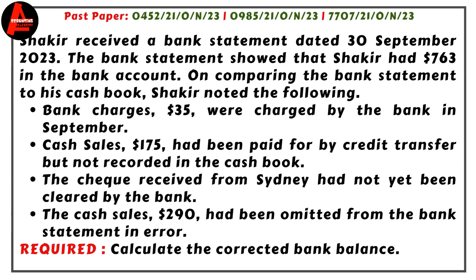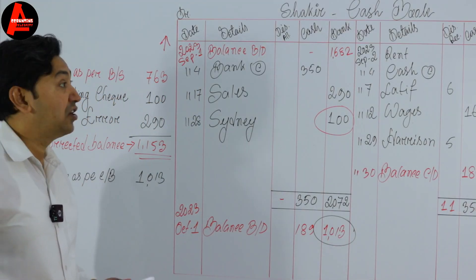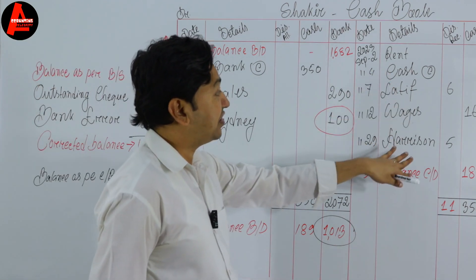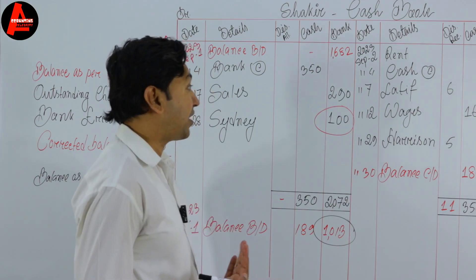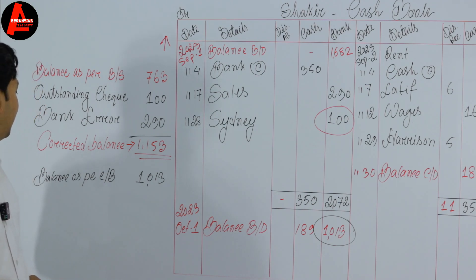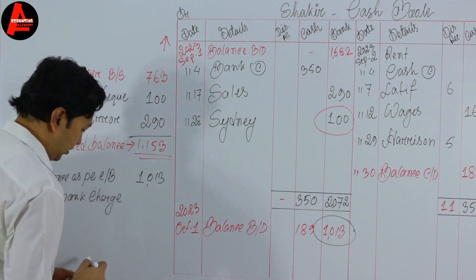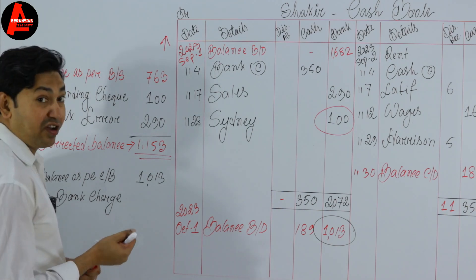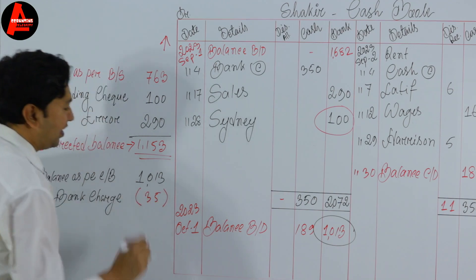Now from the question, bank charges of 35 dollars were charged by the bank in September. We did not record this in the cash book — you can see it is not recorded there. Since bank charges decrease the value of the cash book, we will subtract this amount. So let us write: minus bank charges = 35 dollars.